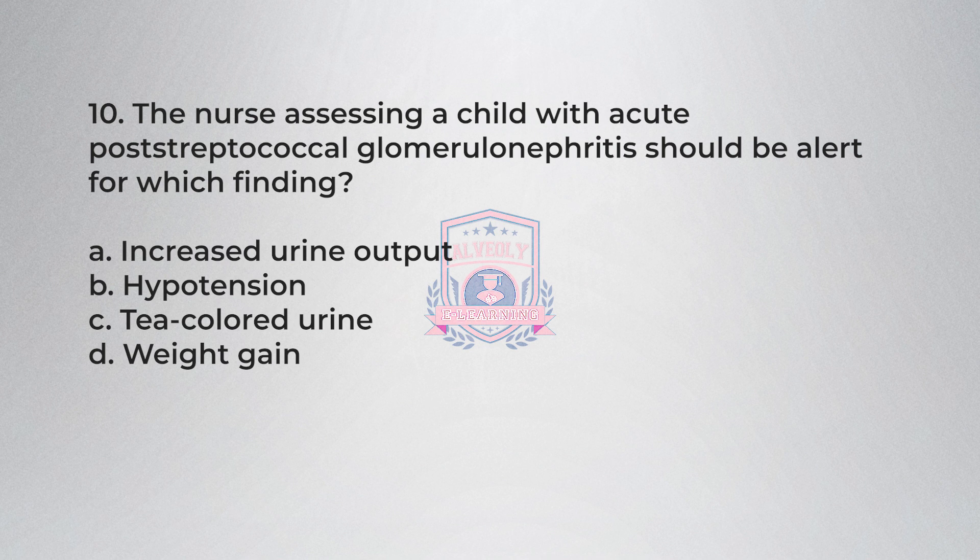Question 10: The nurse assessing a child with acute post-streptococcal glomerulonephritis should be alert for which finding? A) Increased urine output, B) Hypertension, C) Tea-colored urine, D) Weight gain.